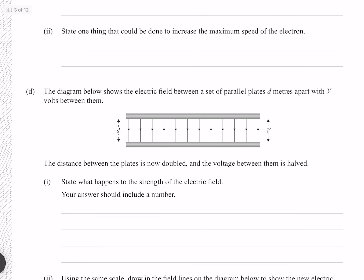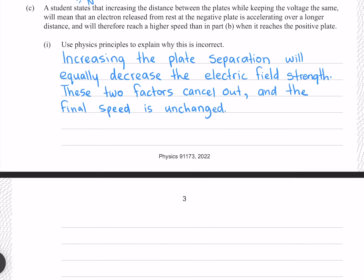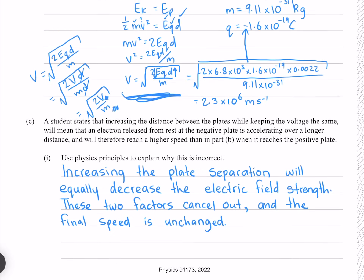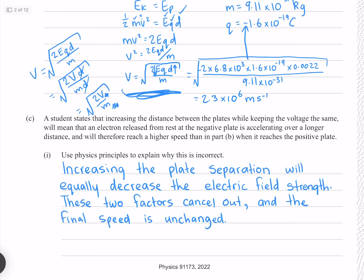State one thing that could be done to increase the maximum speed of the electron. As discussed, our final speed depends on the voltage and the mass. We can't change the mass of the electron, but we can increase the voltage.